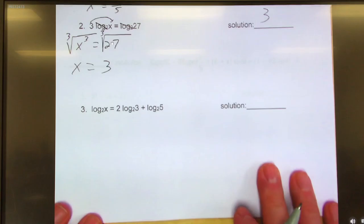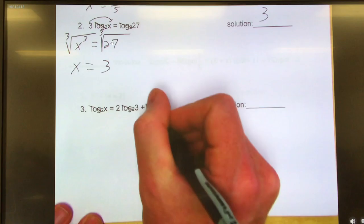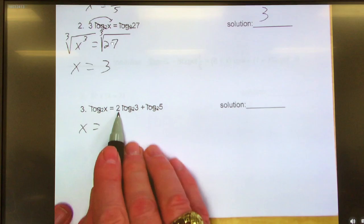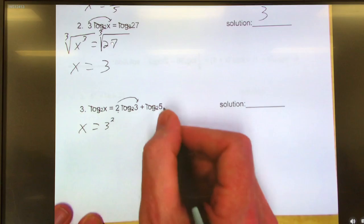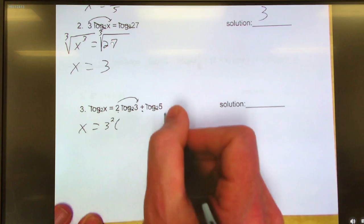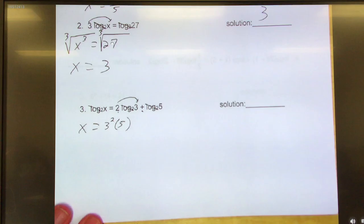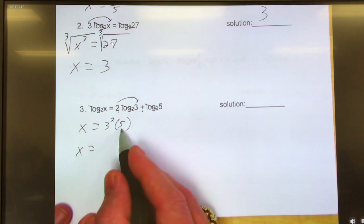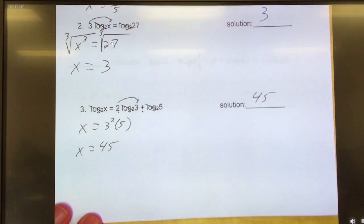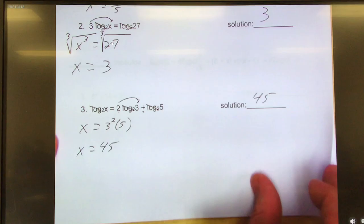Number 3. Everything has a log base 2, so I can go ahead and scratch all the log base 2s off. So that leaves me x on this side. I had 2 up front, so that tells me it's the exponent of what follows. So that's 3 squared. And it was a plus. What does plus mean with logs when I condense? Multiply. So times 5. x equals what? What's 3 squared? 9. 9 times 5 is 45.